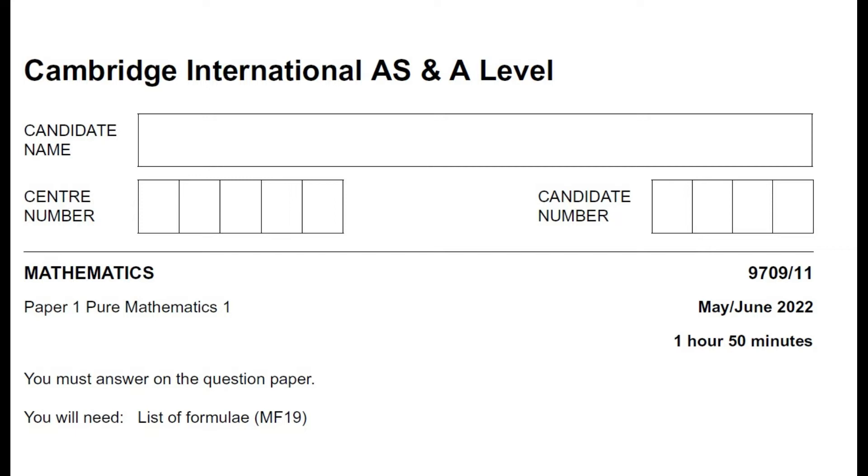Here we are solving Cambridge International AS & A level Pure Math 1 past paper for May June 2022. The paper code is 9709 slash 11.